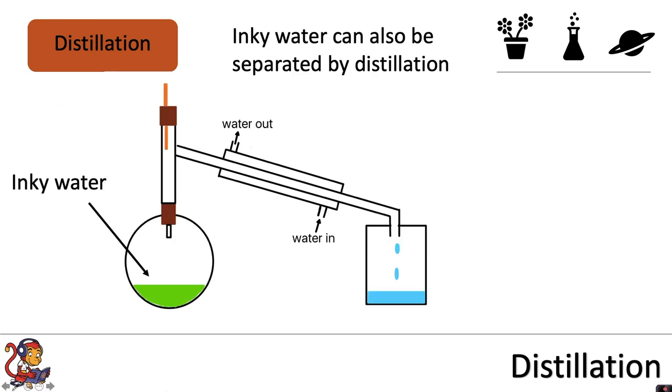Another example of something that we could separate by distillation is inky water. We would do exactly the same thing in putting our inky water in a round bottom flask and heating that flask either using an electric heater or Bunsen burner. The water within the inky water would evaporate,